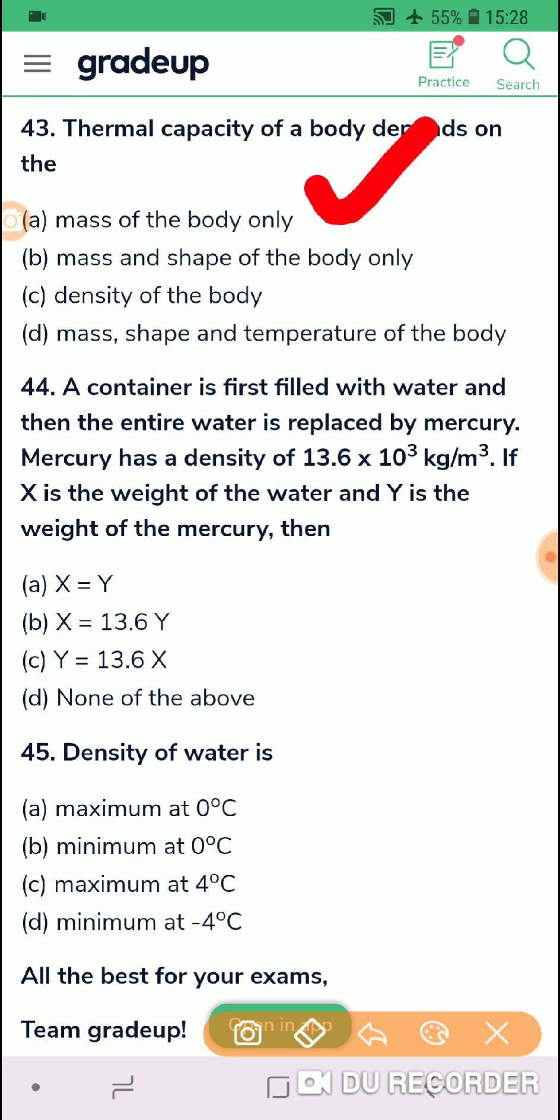Then 44. A container is first filled with water and then the entire water is replaced by mercury. The mercury has a density 13.6 times the density of water. And therefore, they are asking that what is Y. Of course, this Y is the mass of the mercury will be 13.6 times that of the mass of water. So Y will be 13.6 X. That means question 44, option C is correct. Y is 13.6 X.